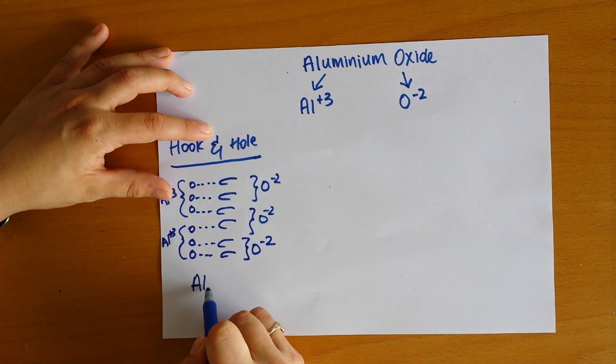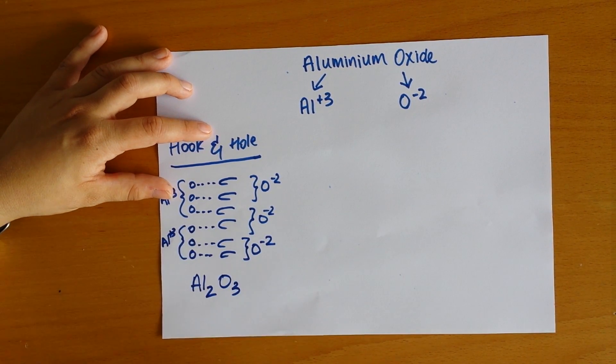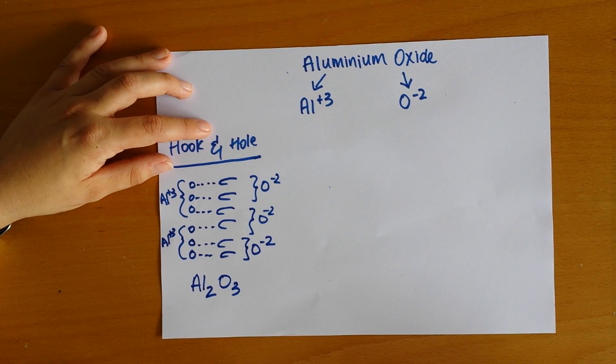So now we just count up how many aluminum that we have. The aluminum atoms that we have is two and the oxide, we have three. So now we have a balanced ionic compound.